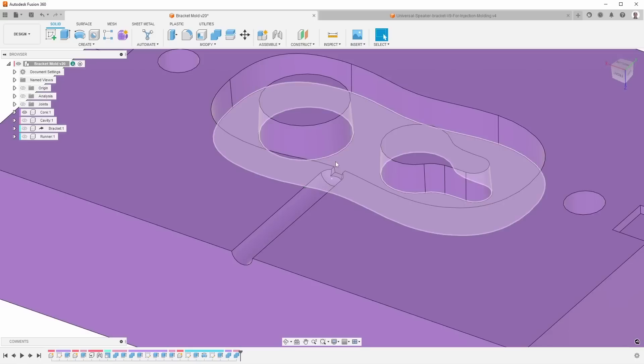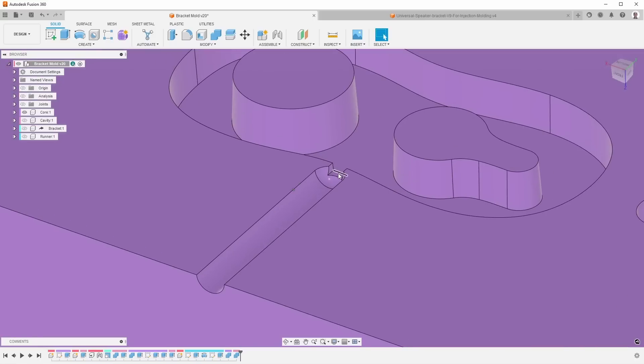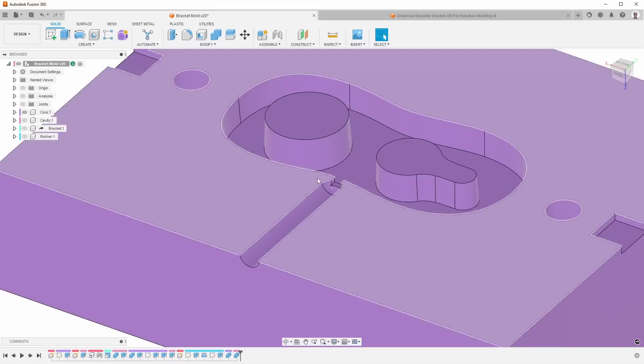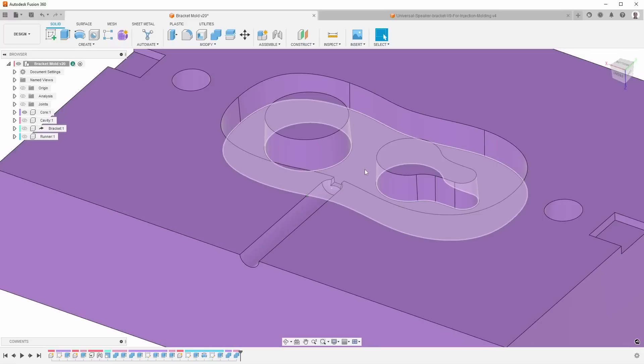One thing you will notice is that this gate is quite large. I originally had a smaller gate. The problem with the smaller gate is that this would freeze off too soon and would not be able to maintain pressure long enough for major parts of this to cool down enough to solidify before it shrank. When I had the smaller gate, the sink marks were much worse. So having a larger gate allows me to keep the pressure applied while it's still molten in this area here to minimize the shrinkage.